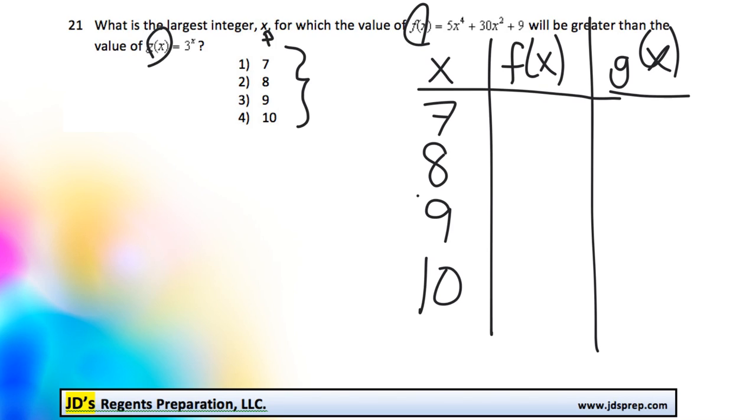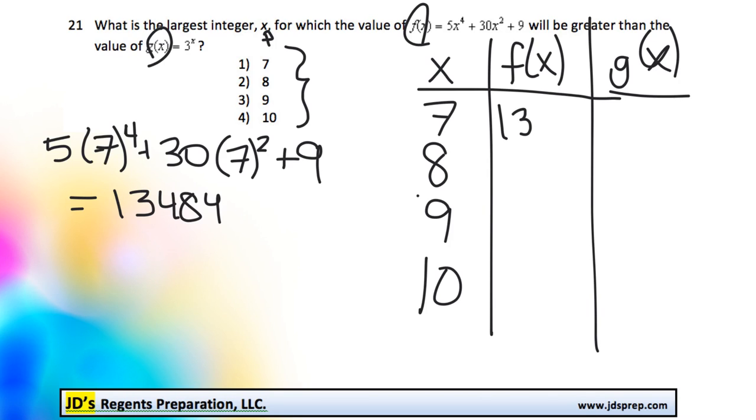So for our f(x), if x is 7, we would do 5 times 7 to the power of 4 plus 30x, which is 7 squared, plus 9. And if we type that into our calculator, we should get 13,484. So that's going to go up here.